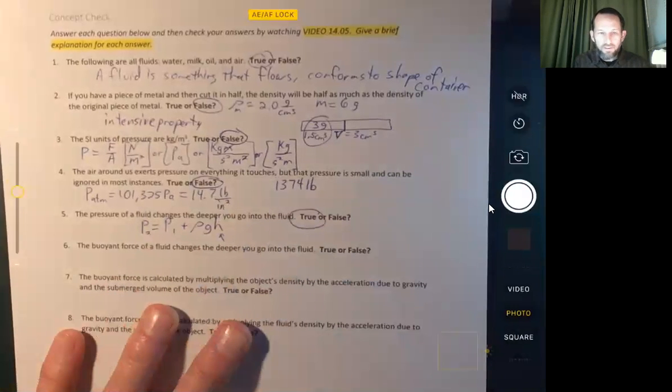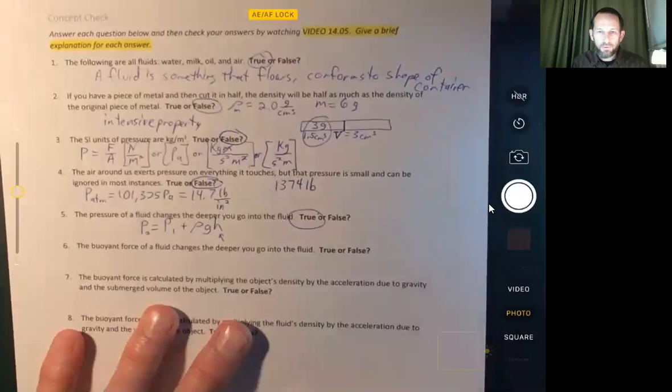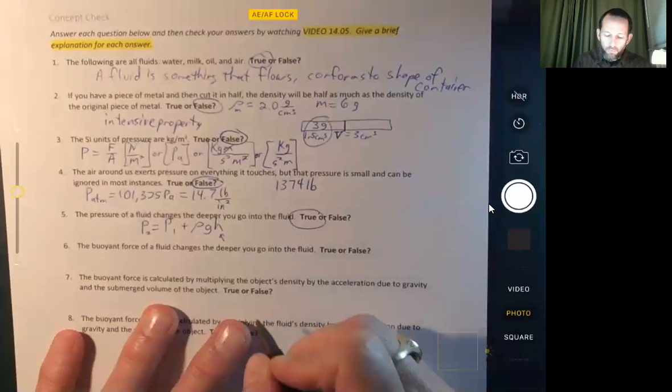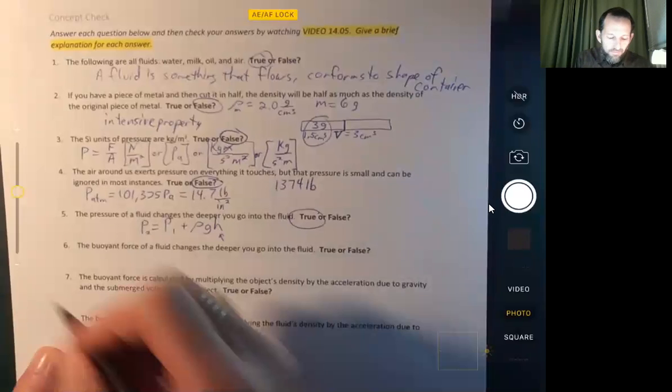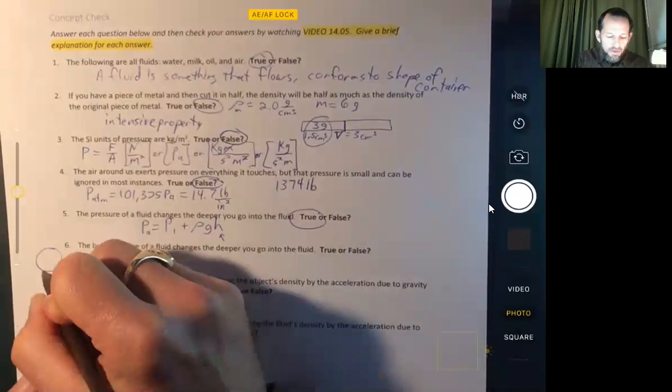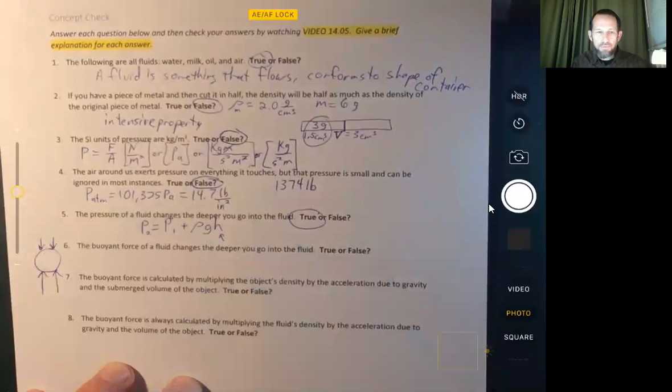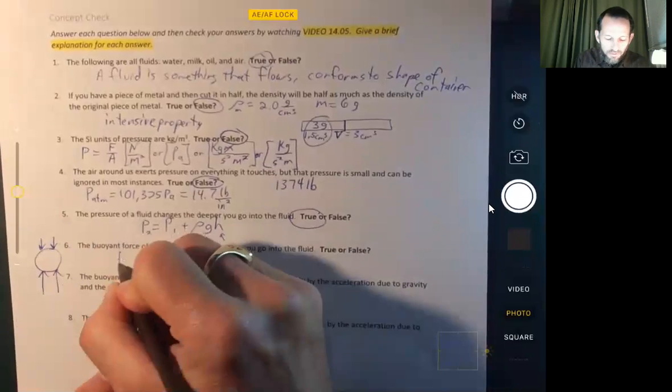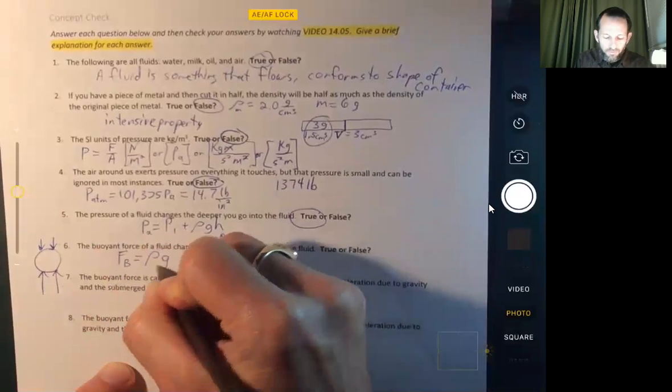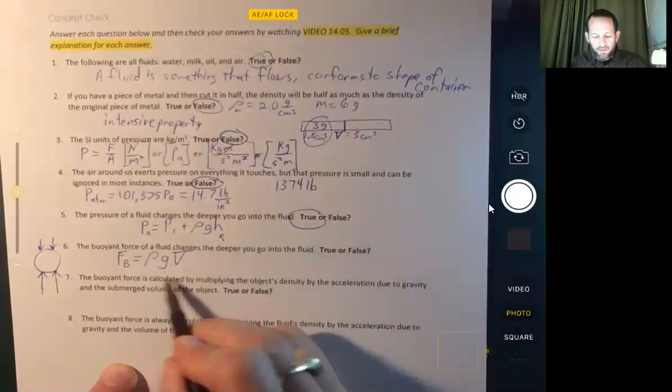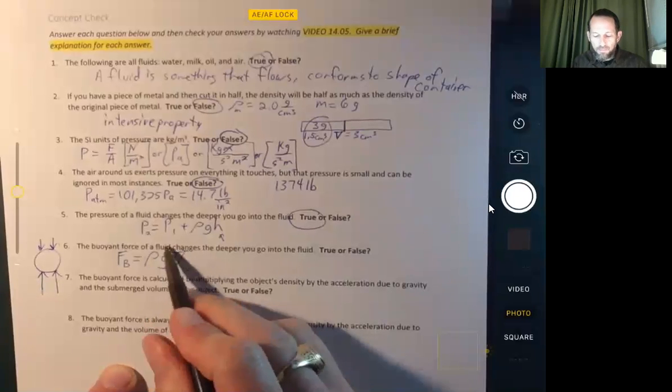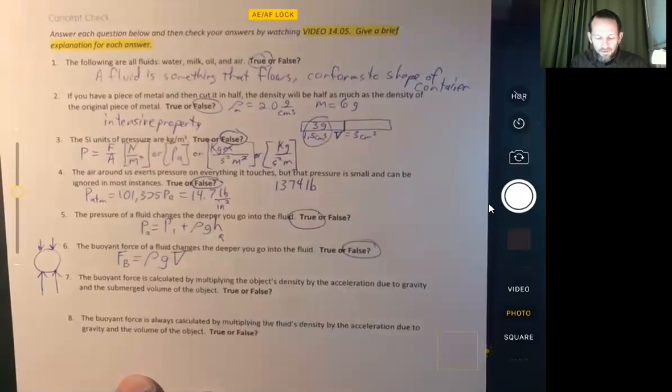Now the buoyant force of a fluid changes the deeper you go into a fluid. Is that true or false? Well, the buoyant force is based on the fact that for an object, the pressure is greater underneath than it is on top. So the buoyant force happens because of the fact that there are different pressures on the top and bottom of the object. However, when you go lower, while the pressures change, the buoyant force does not. And if we look at the equation for buoyant force, we can see that very clearly this is not dependent on how deep the object is. So that is a definite false.